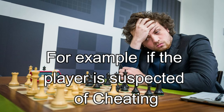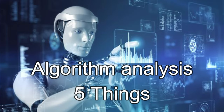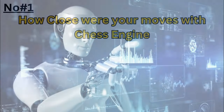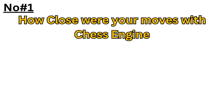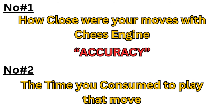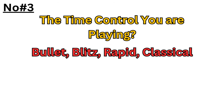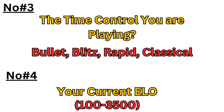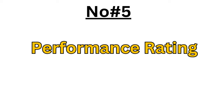For example, if a player is suspected of cheating, the algorithm analyzes 5 things: 1. How close your moves were with the chess engines, which is your accuracy. 2. The time you consume to play that move. 3. The time control you are playing. 4. Your current ELO rating. 5. The key factor: performance rating.